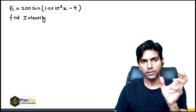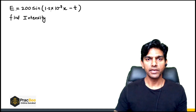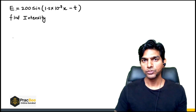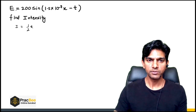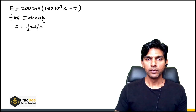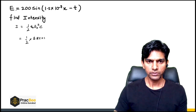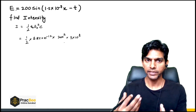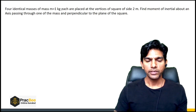Next: an EM wave is given as E = 200 sin(1.5×10⁷ x − t). Find the intensity. The intensity formula for electromagnetic radiation is I = ½ε₀E₀²c, where E₀ = 200 V/m. Substituting ε₀ = 8.85×10⁻¹² and c = 3×10⁸ and simplifying gives the answer. Again a straightforward formula-based question.